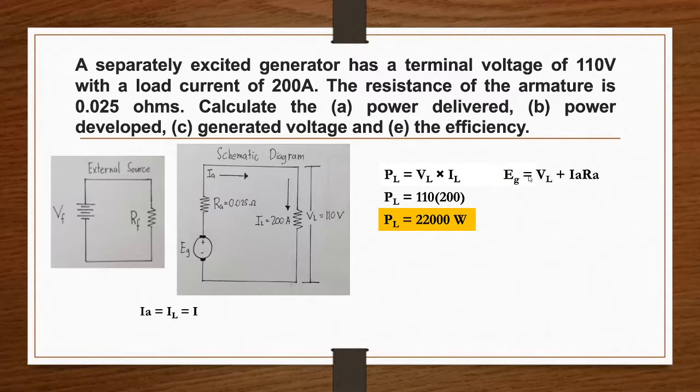Solving for generated voltage. E_G is equal to load voltage plus armature load times armature resistance.